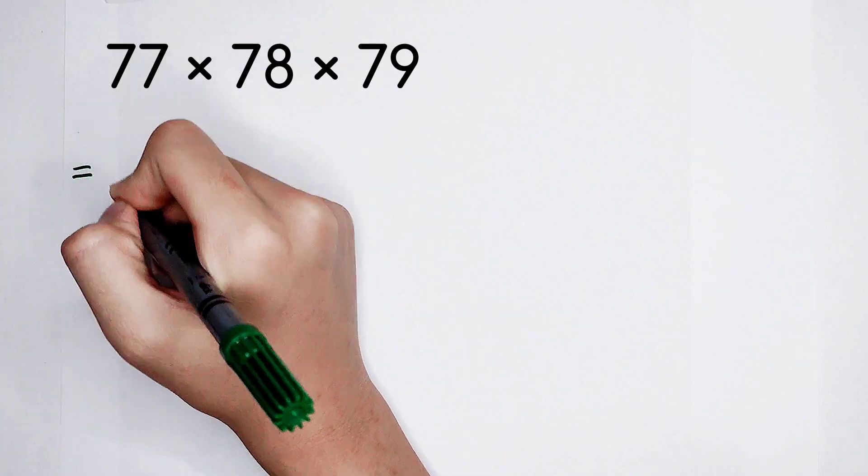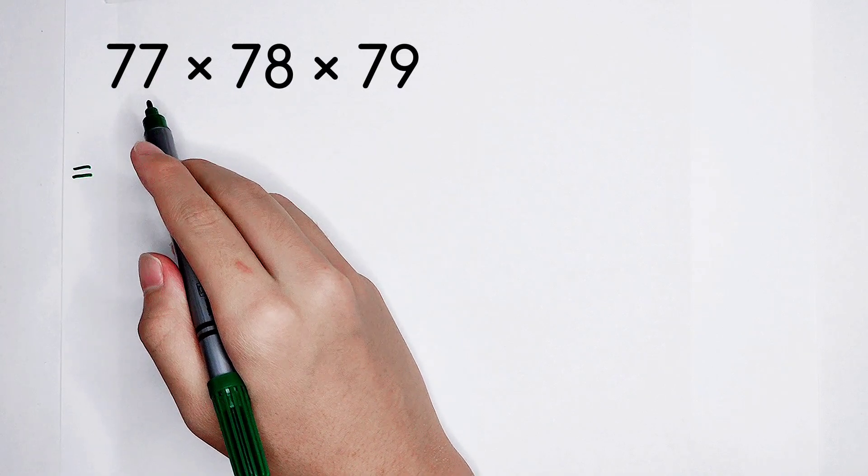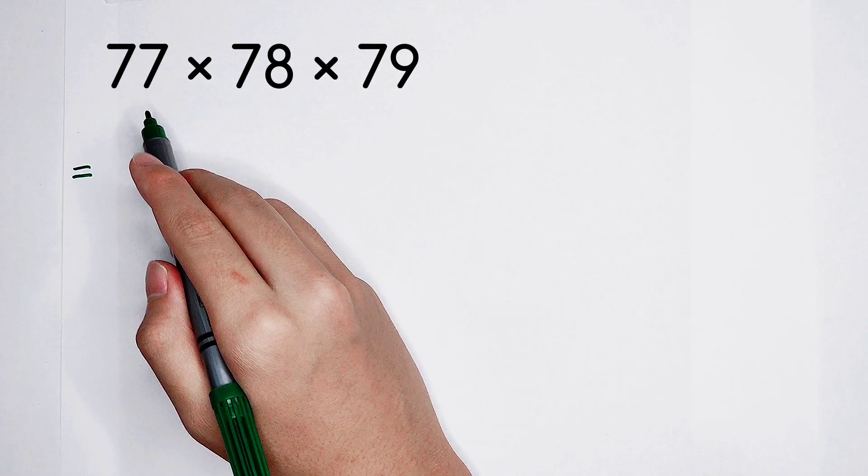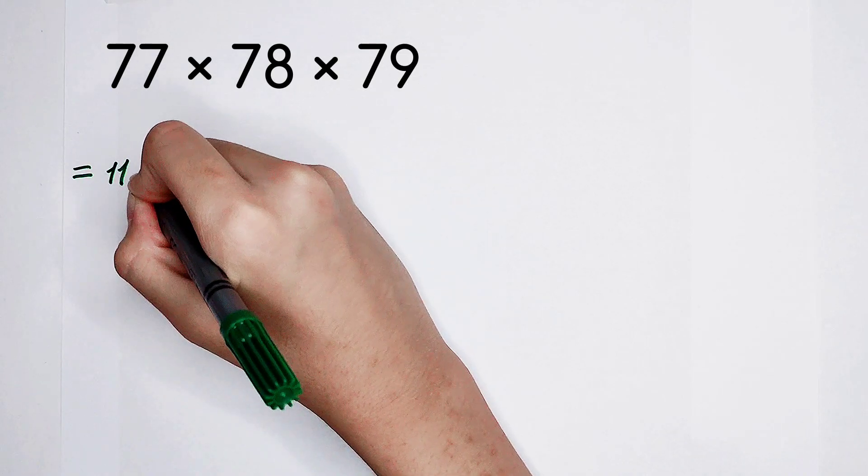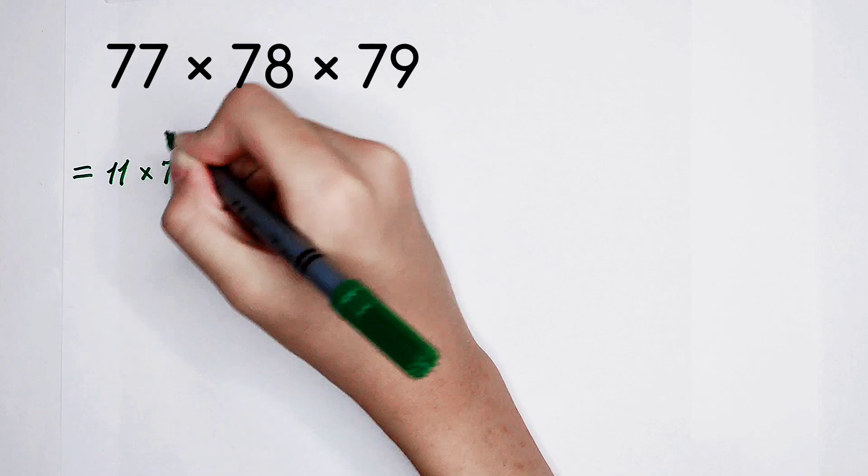And then I have a question. What about the first number, 77? It's also a good-looking number, isn't it? It can be written as 11 times 7.